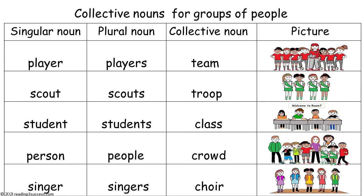Before we have kids complete the activities, we want them to learn a few more collective nouns for groups of people. We are going to look at five collective nouns used in the activities. We have already reviewed that team is a collective noun for players. In our activities, troupe will be the collective noun for scouts, class for students, crowd for people, and choir for singers.